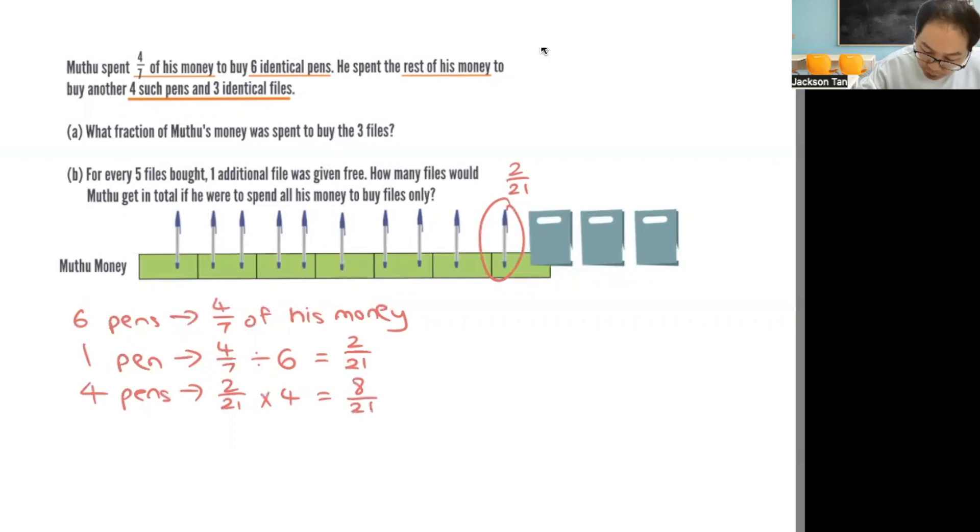So now you already know four pens. The remaining money is three out of seven. So three out of seven minus eight out of twenty-one, that will give you one out of twenty-one.